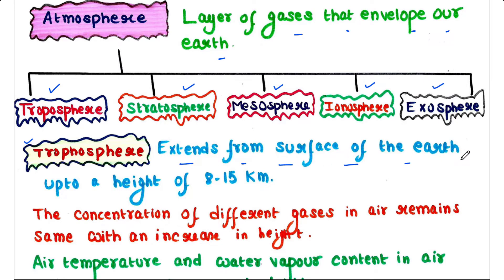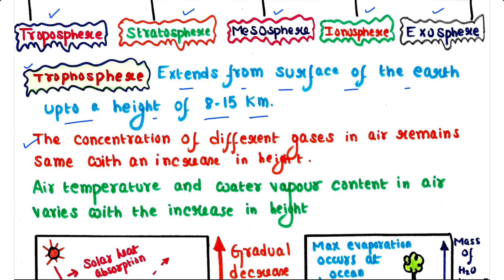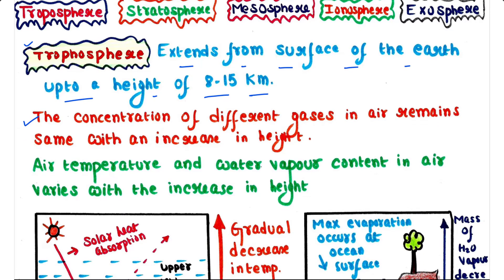First is troposphere. Troposphere extends from the surface of the earth up to a height of 8 to 15 kilometers. In this layer, the concentration of different gases in air remains the same with an increase in height, but the air temperature and water vapor content in air varies with the increase in height.